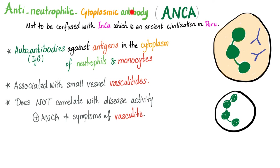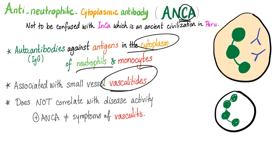Anti-neutrophilic cytoplasmic antibodies are antibodies against the cytoplasm of neutrophils and monocytes. They are not associated with arthritis; on the other hand, they are associated with vasculitis.